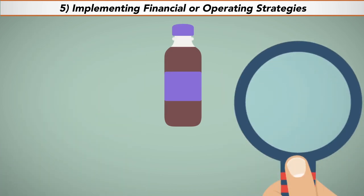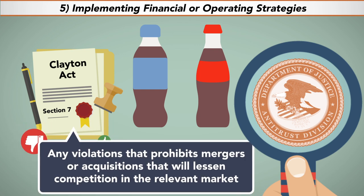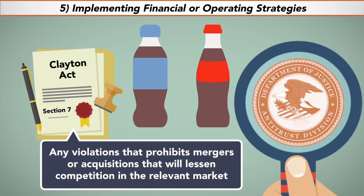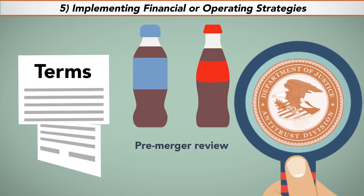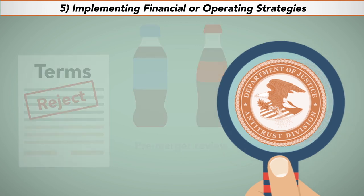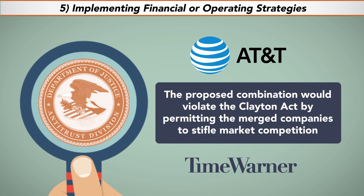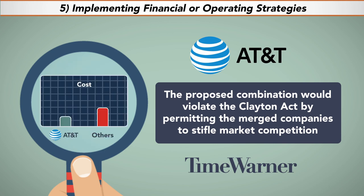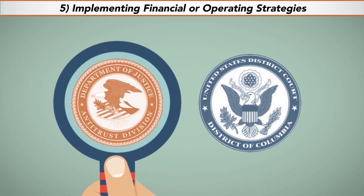Typically, in a pre-merger review, the DOJ's Antitrust Department determines whether the proposed merger would violate Section 7 of the Clayton Act, which prohibits mergers or acquisitions that will lessen competition in the relevant market. In a pre-merger review, the DOJ has discretion to modify the terms of the proposed merger, approve, or reject the proposed deal. In a major case, the Department of Justice rejected a proposed AT&T merger with Time Warner, finding that the proposed combination would violate the Clayton Act by permitting the merged companies to stifle market competition by lowering the cost to AT&T's customers of Time Warner's movie libraries and increasing movie acquisition costs to other cable TV competitors. The DOJ filed suit in the Federal District Court for the District of Columbia in 2017.